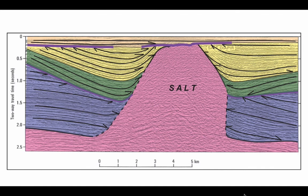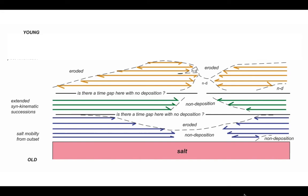Moving up now to the yellow units, these show relationships of onlapping the salt but also internal onlaps. So quite complicated relationships of non-deposition against the salt and against the lower units, and erosion at the top of the yellow.